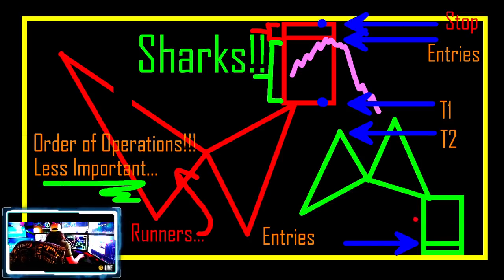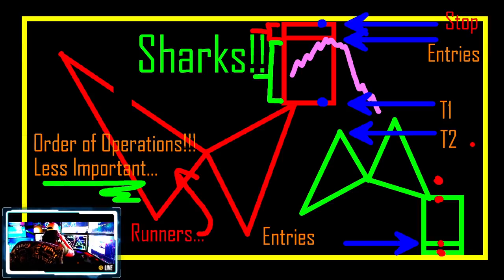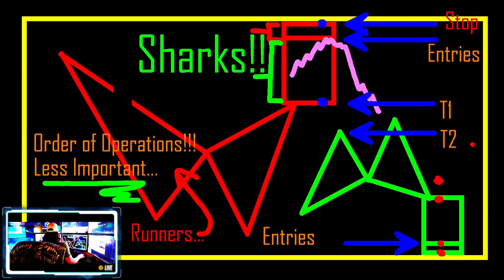Same thing in the opposite direction — you guys get it. There is your target, your stop, entry, target one, and target two right outside. Runners depending on time of day and Algo Box. If you've got multiple crosses coming into this location, you guys should know the drill. Take a screenshot of this. This is called the shark back — not to be confused with the shark tail.